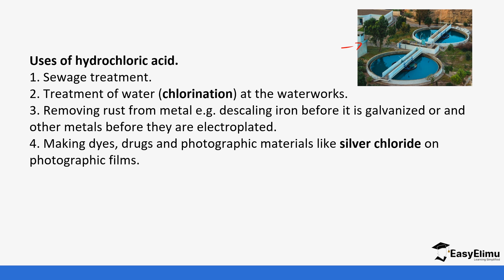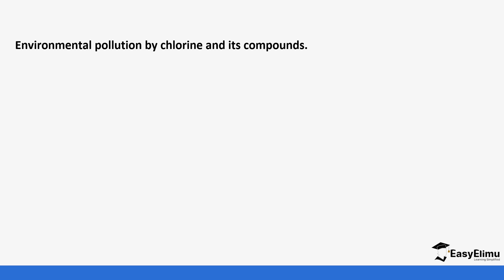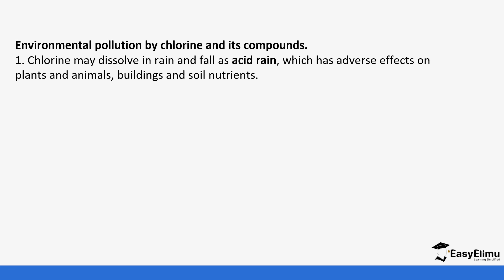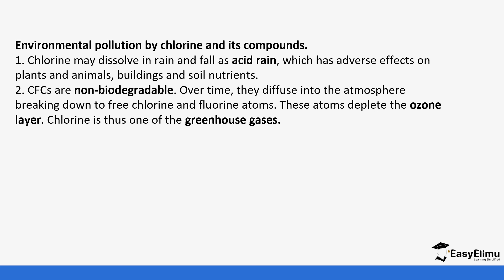Next, we look at the environmental effects of chlorine and its compounds, which sums up our learning on this topic. Chlorine may dissolve in rainwater and fall as acid rain, which has adverse effects on plants, animals, buildings, and soil nutrients. CFCs (chlorofluorocarbons) are non-biodegradable; when they diffuse into the atmosphere and break down into chlorine atoms, they deplete the ozone layer and act as greenhouse gases.